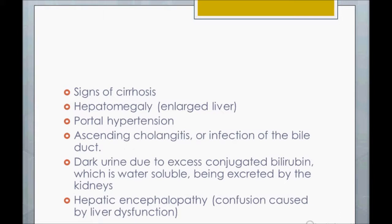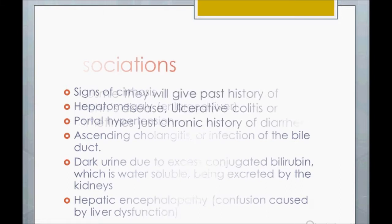In later stages, signs of cirrhosis can develop, including hepatomegaly, portal hypertension, ascites, dark urine, and so on.